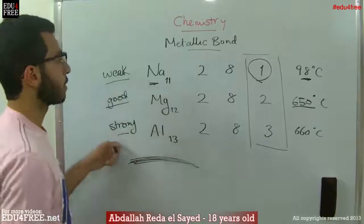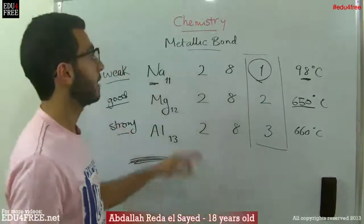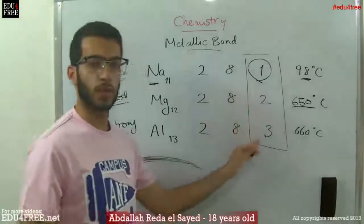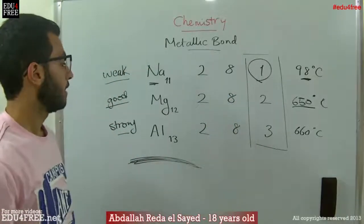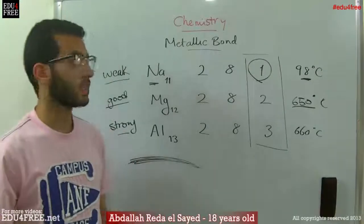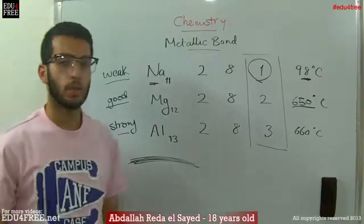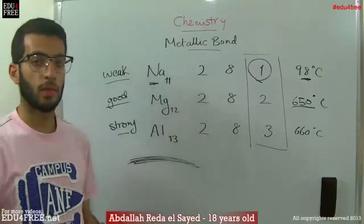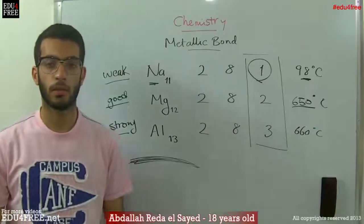What we conclude from this is that the strength of the metallic bond depends on the number of electrons in the outermost energy level of the metal. And that's it for chapter 3 in chemistry. Next time, we'll begin chapter 4, which talks about the elements of the S-block in the periodic table. Until then, I thank you for watching, and see you.